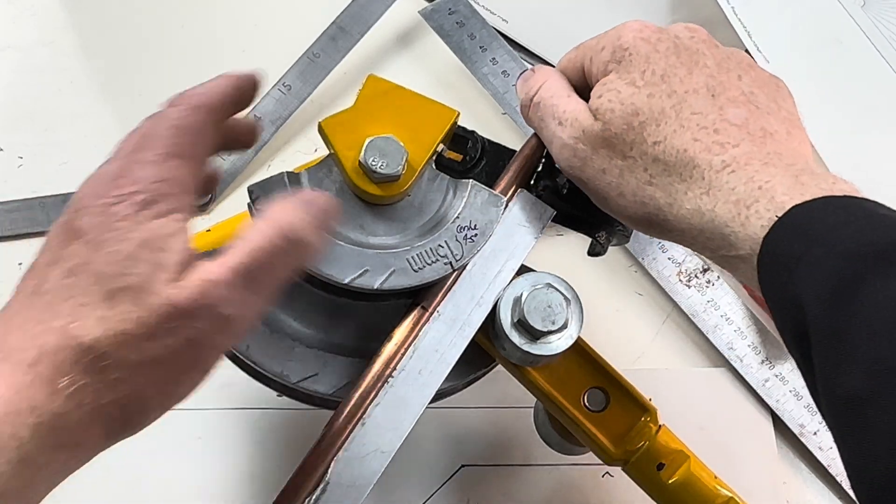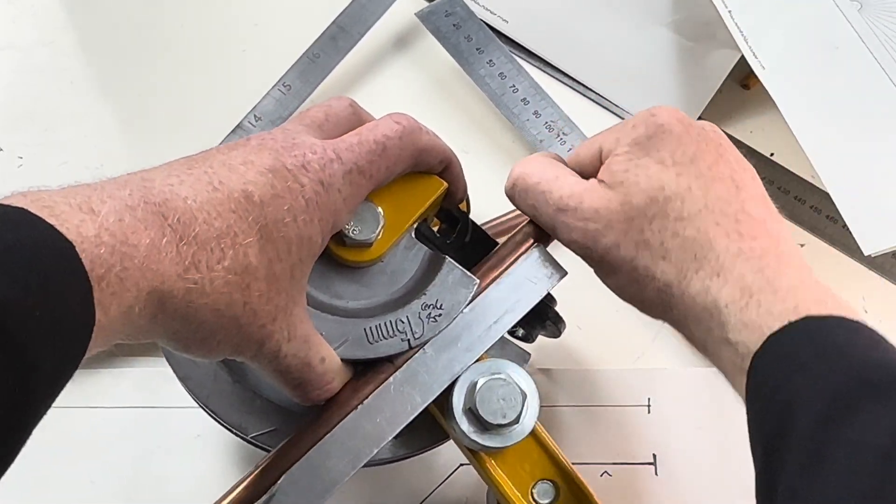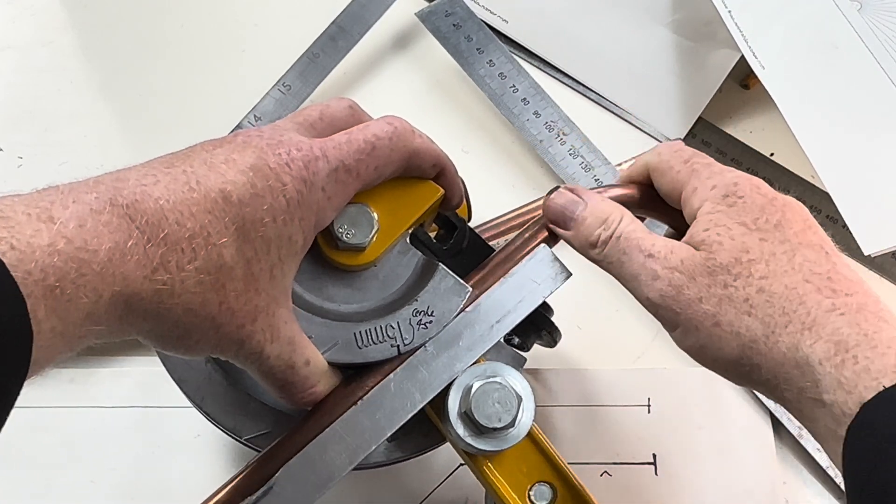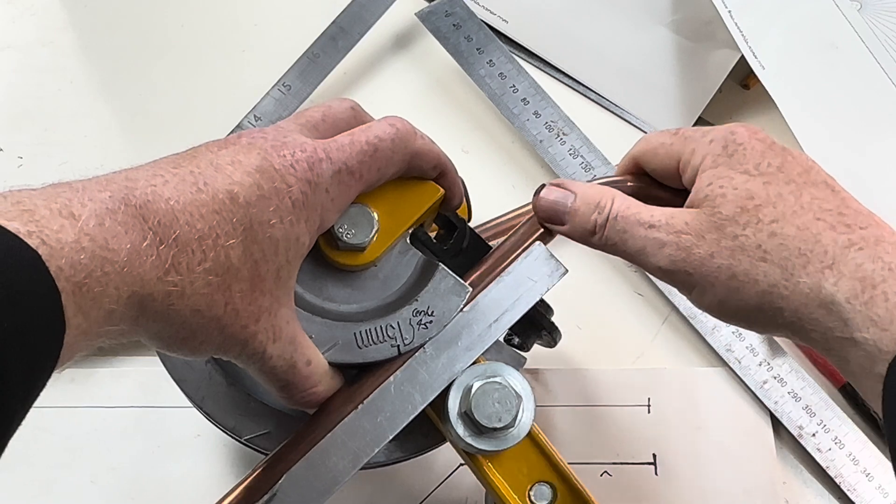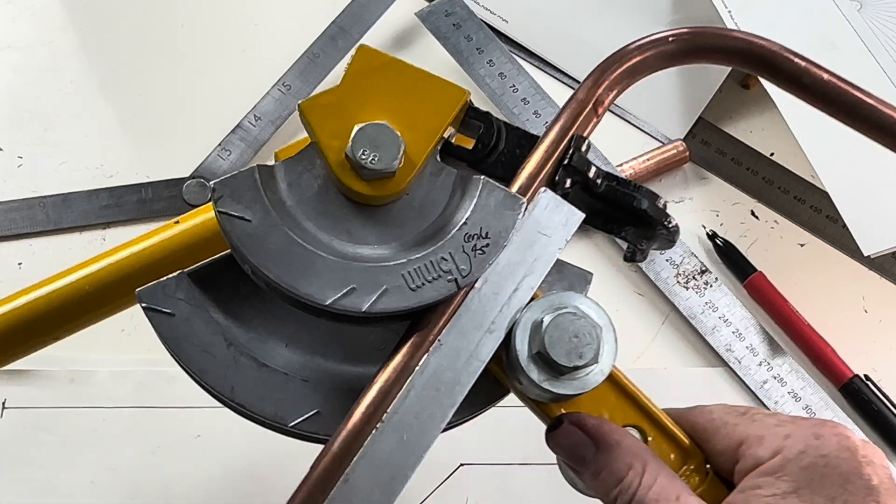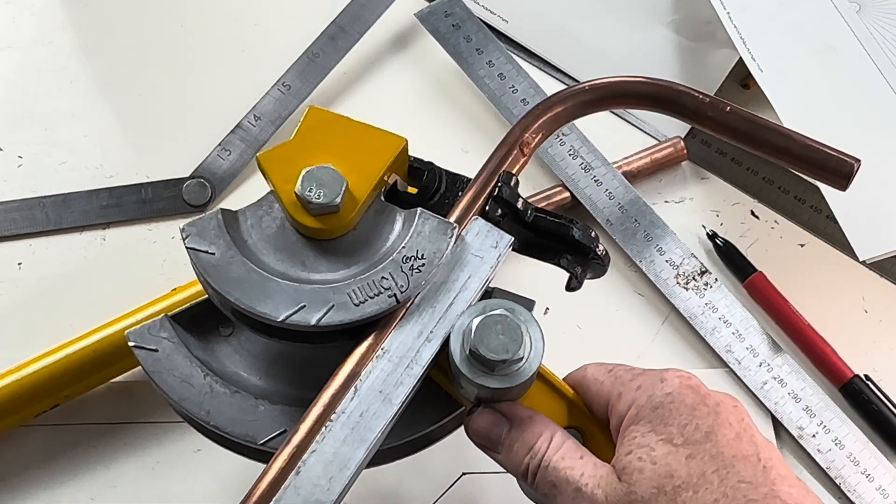We now need to line up the line we marked on the pipe earlier, which is the centre of the 45 degree bend, where we worked it out on the former. So like so.